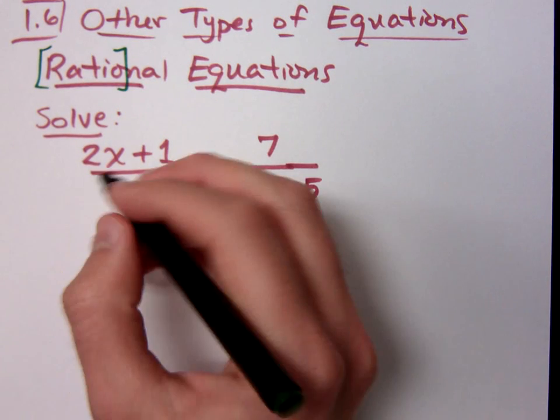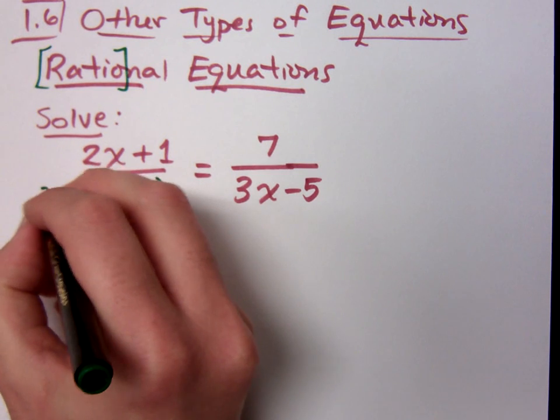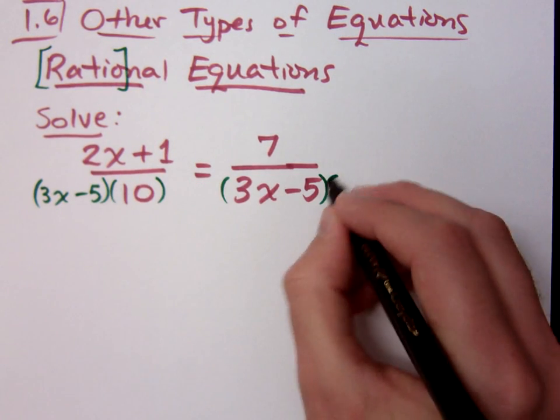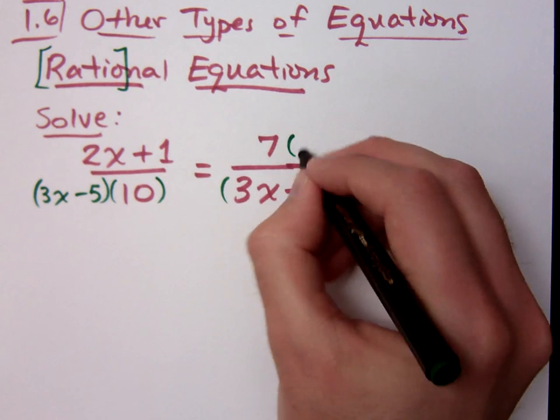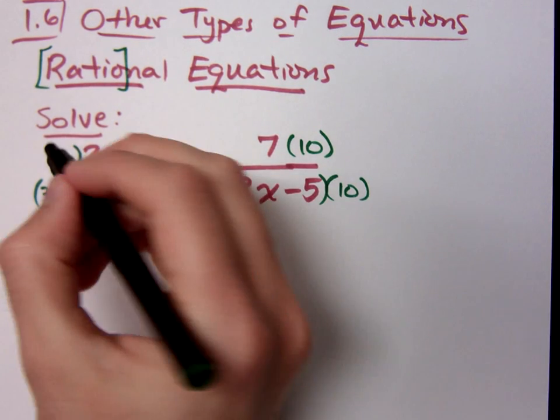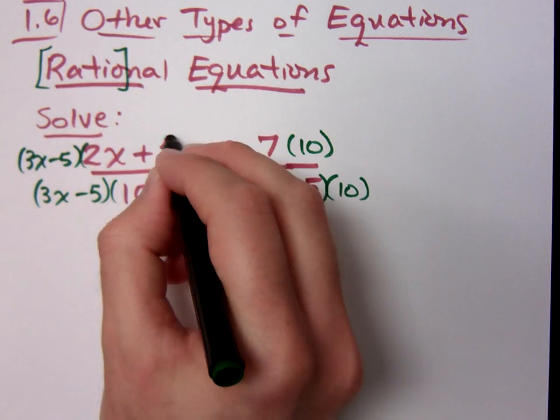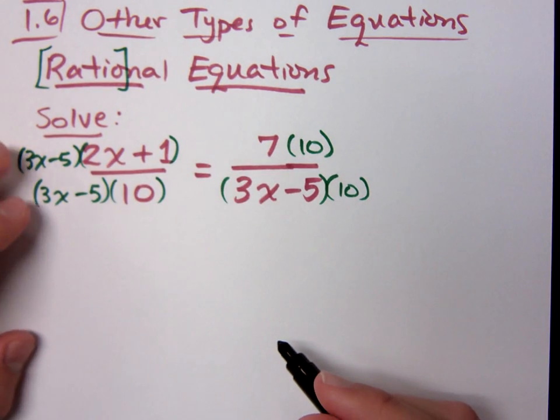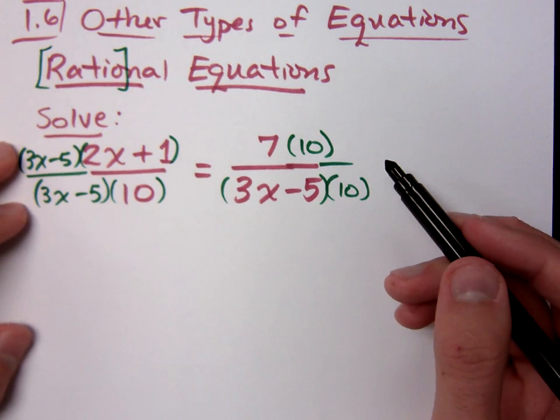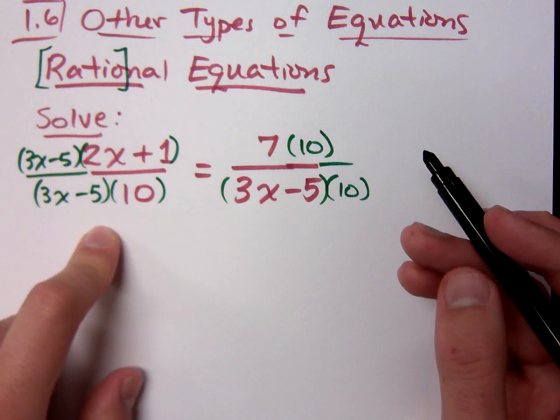So what you could do is this. What factors missing here? We're missing a 3x minus 5. What factor is missing here? We're missing 10. So if I'm making this adjustment, what I put in the top, I have to put in the bottom, and what I put in the bottom, I have to put in the top. Do I have the same denominators all the way across here now? Yes.